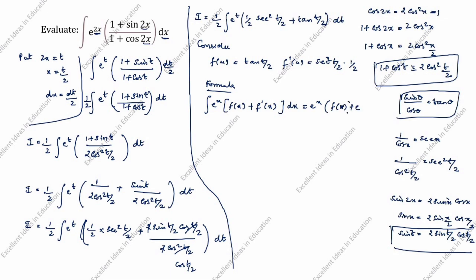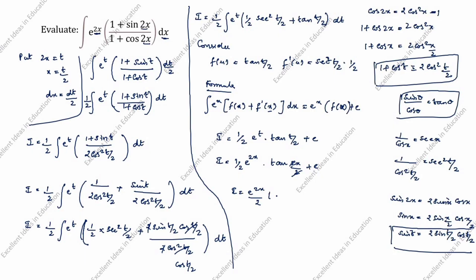Applying the formula, e^t corresponds to e^x, f(t) = tan(t/2), and f′(t) = (1/2)sec²(t/2). Therefore I equals (1/2)·e^t·tan(t/2) + C. Substituting back t = 2x: I equals (1/2)·e^(2x)·tan(2x/2) + C. The 2s cancel, giving the final answer: I = e^(2x)/2 · tanx + C.